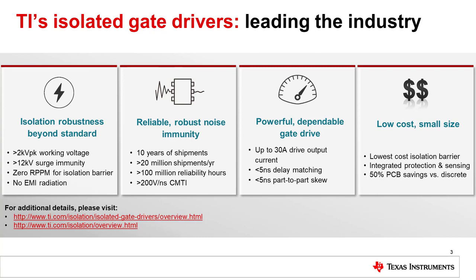Other gate drivers have over 100 million reliability hours of testing and CMTI ratings exceeding 200 volts per nanosecond, ensuring that the driver has a long product lifetime. Some of our high performance drivers can output up to 30 amps drive current, while others have great timing characteristics with delay matching less than 5 nanoseconds. These performance parameters help to create more efficient, lower cost systems. Finally, our devices come in a variety of package sizes, ultimately reducing costs and overall sizes for PCBs.